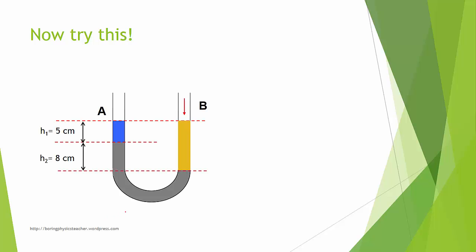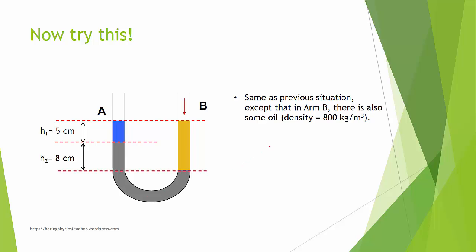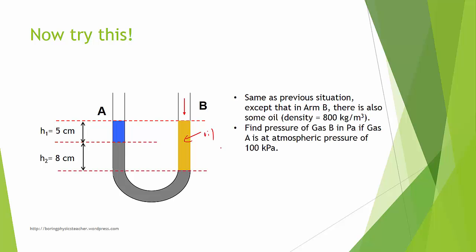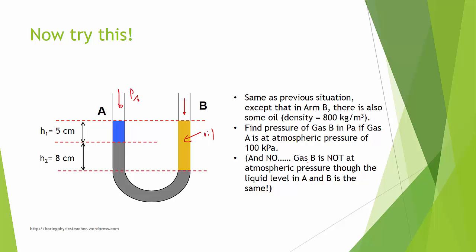Let's try a practice problem. This is the same setup, but arm B contains some oil. Find the pressure of gas B if gas A is at atmospheric pressure. Note that gas B is not at atmospheric pressure even though it appears at the same level. The answer is provided for you to check your work.